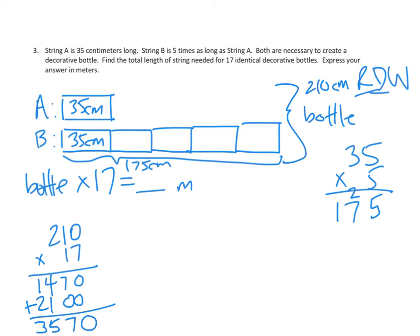We add our partial products together, and we have 3,570. So 17 bottles will be 3,570 centimeters. But we need to convert that into meters. How many meters in a centimeter? That's right. 1 one-hundredth of a meter is the same as a centimeter.